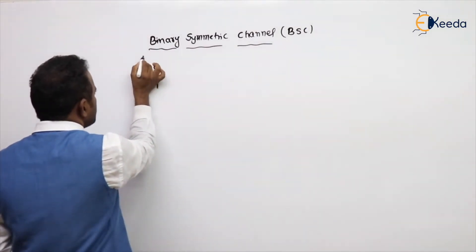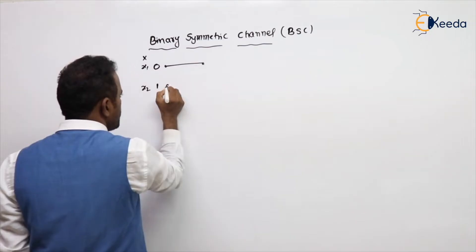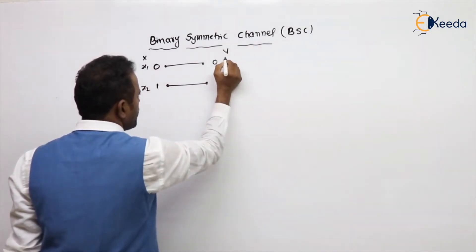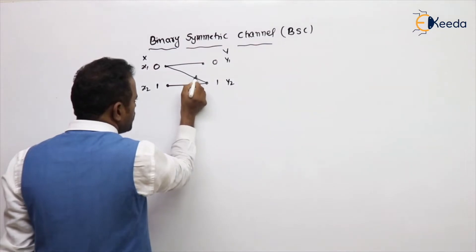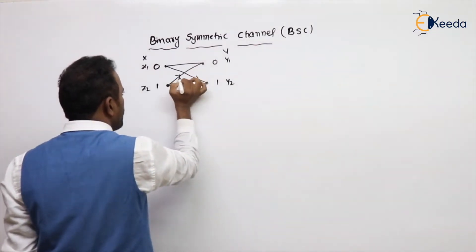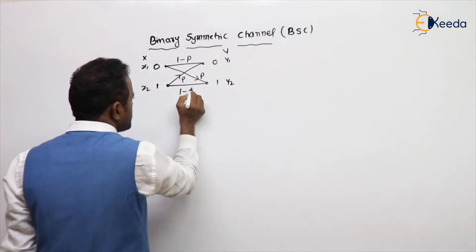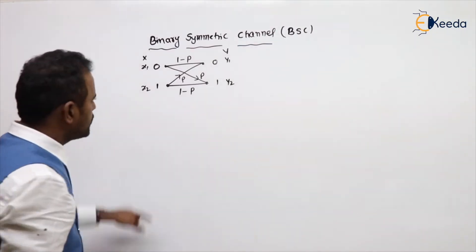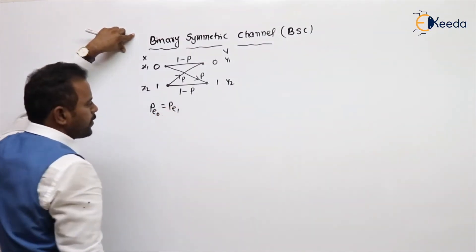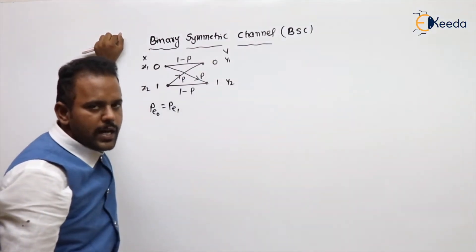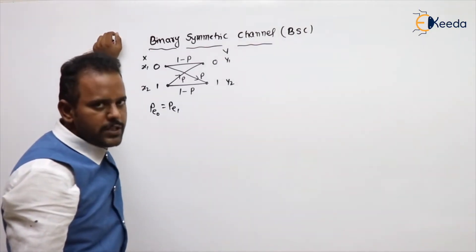The two input symbols are zero and one — this is the input side x, or x1 and x2. The output side also has two symbols, zero and one — called y1 and y2. The meaning of symmetry is that the probability of error for zero and the probability of error for one are both the same. The correct transmission probability is 1 minus p for both, and rows and columns of the channel matrix are identical except for permutations.